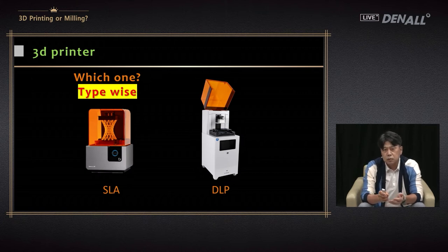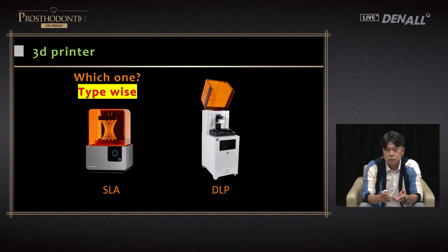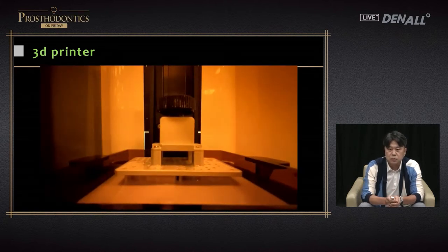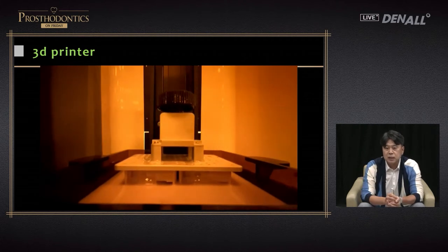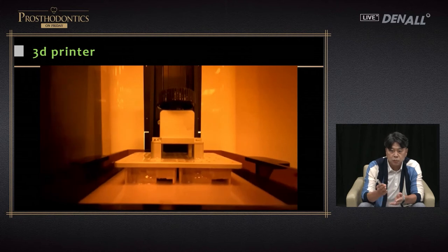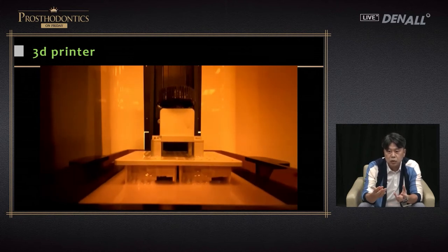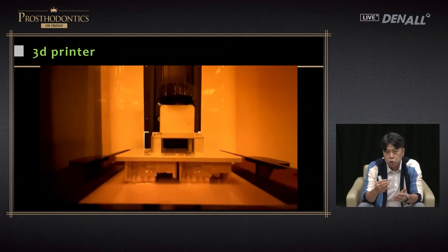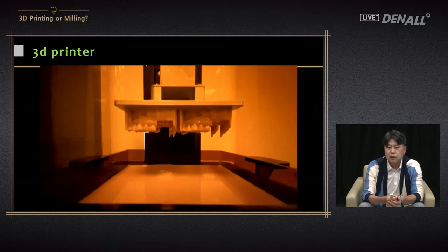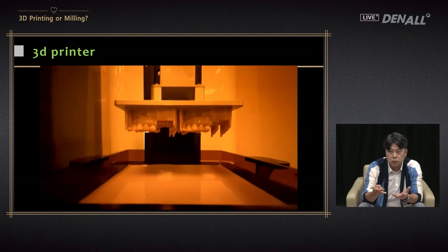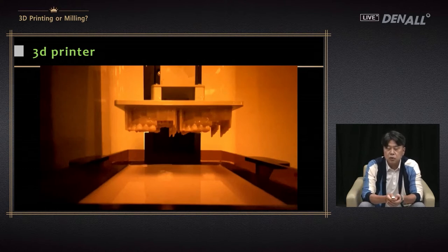How do 3D printers print out objects? Here is a time-lapse video — it took about an hour to print, condensed to about a minute. The plate is going up and down continuously and something at the bottom is created. The dental model is created hanging at the bottom. At the bottom there is a water tank with resin. Layer by layer, the material is deposited to print an object.